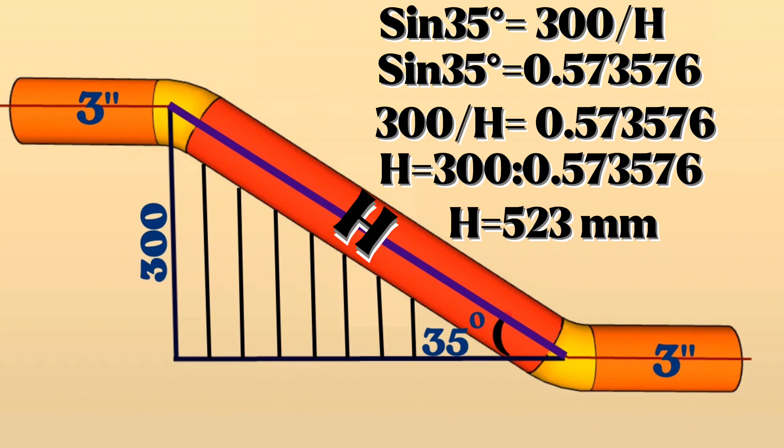As we know, the length of the H hypotenuse is also the distance between the centers of the butt-weld elbows. In this case, the overall length between the centers of the butt-weld elbows is 523 millimeters.